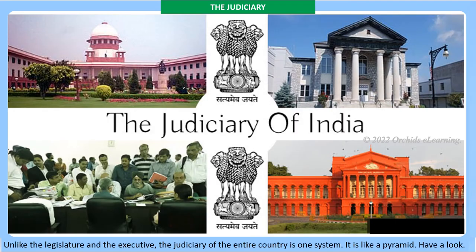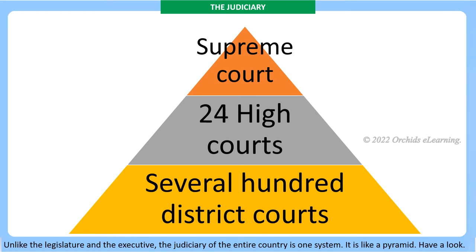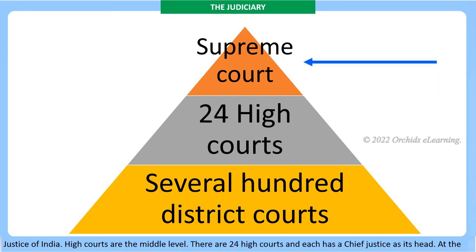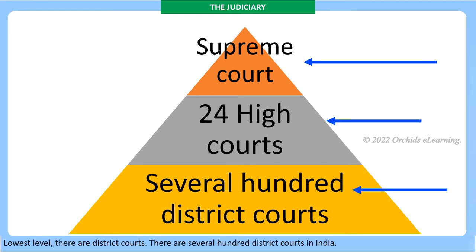Unlike the legislature and the executive, the judiciary of the entire country is one system. It is like a pyramid: at the top is the Supreme Court, the highest court, located at New Delhi, headed by the Chief Justice of India. High Courts are the middle level — there are 24 High Courts and each has a Chief Justice as its head. At the lowest level there are District Courts — there are several hundred district courts in India.